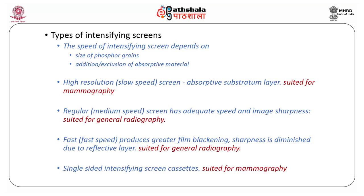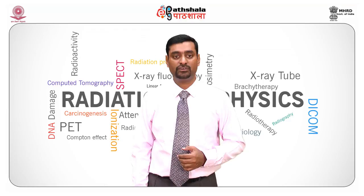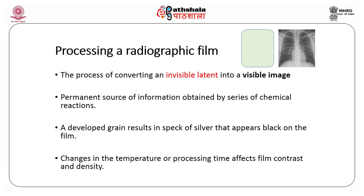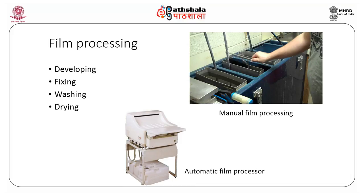Next we move on to the processing of the radiographic film. The process of converting the invisible latent image into a visible image is called processing. It is a permanent source of information obtained by a series of chemical reactions. The developed grain results in a speck of silver that appears black on the film. Changes in temperature and processing time affect film contrast and density. Film processing has four steps: developing, fixing, washing, and drying.